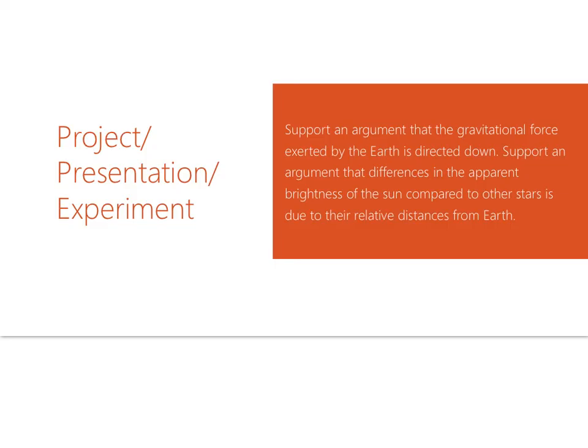After fully mastering all of this, you should be able to create a project, presentation, experiment, or model. You should be able to support an argument that the gravitational force exerted by the earth is directed downward, and support an argument that differences in the apparent brightness of the sun compared to other stars is due to their relative distances from the earth.